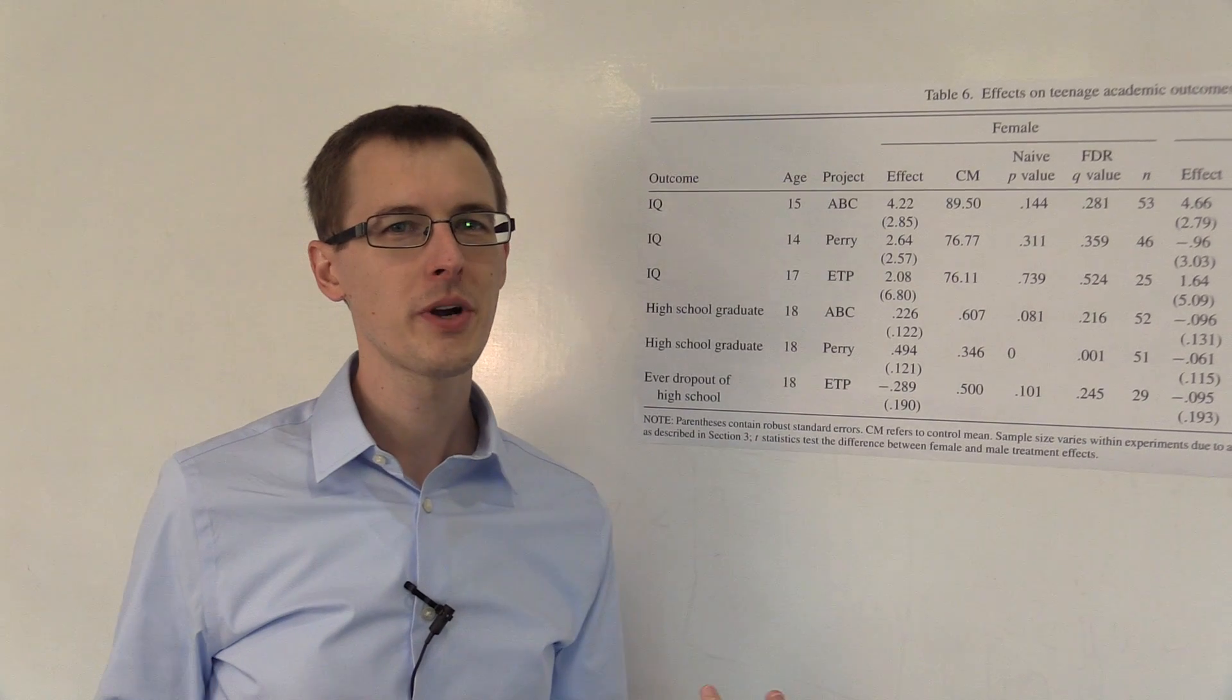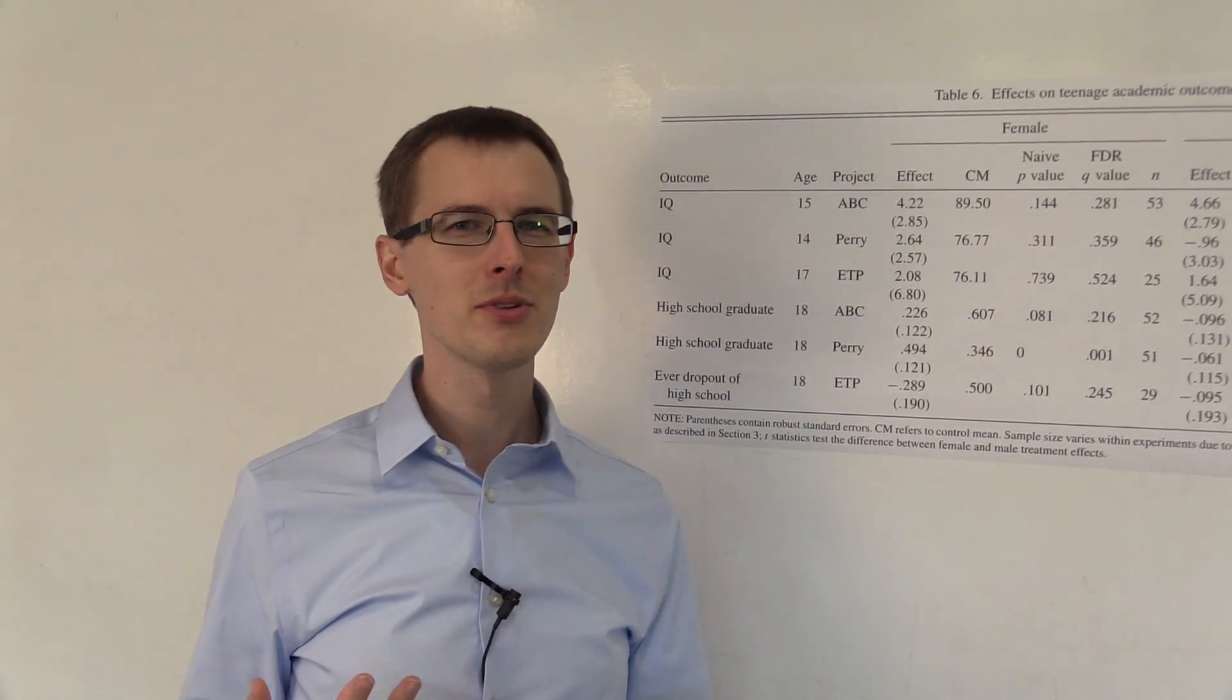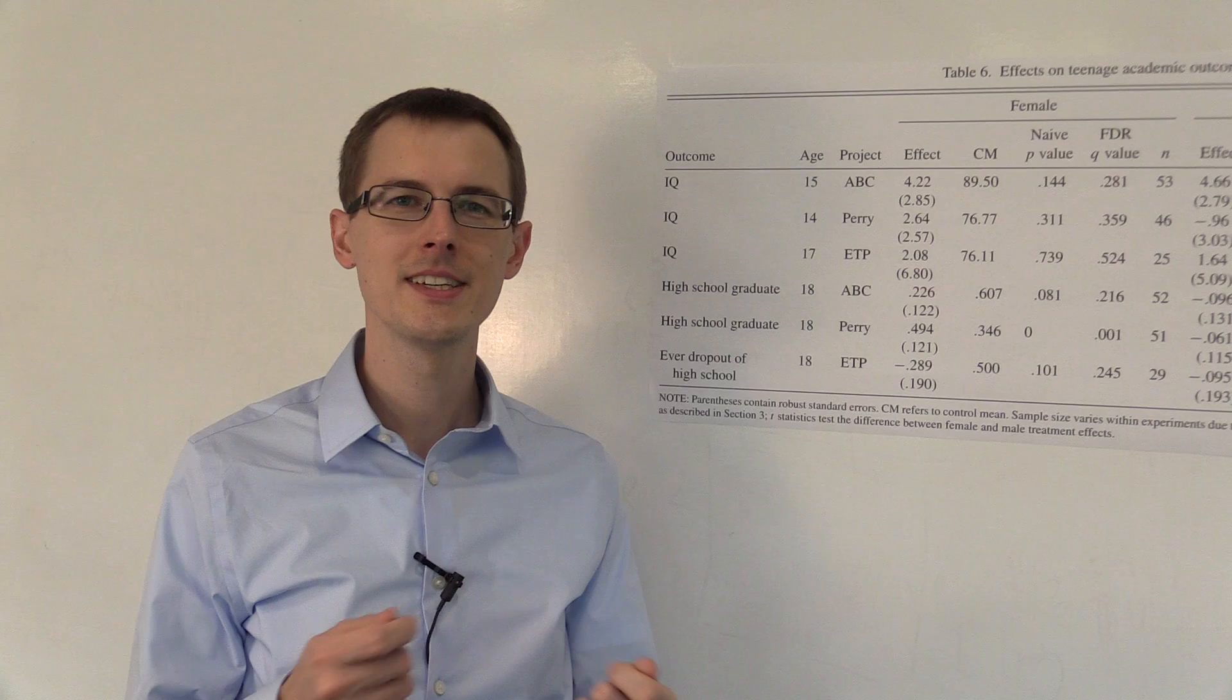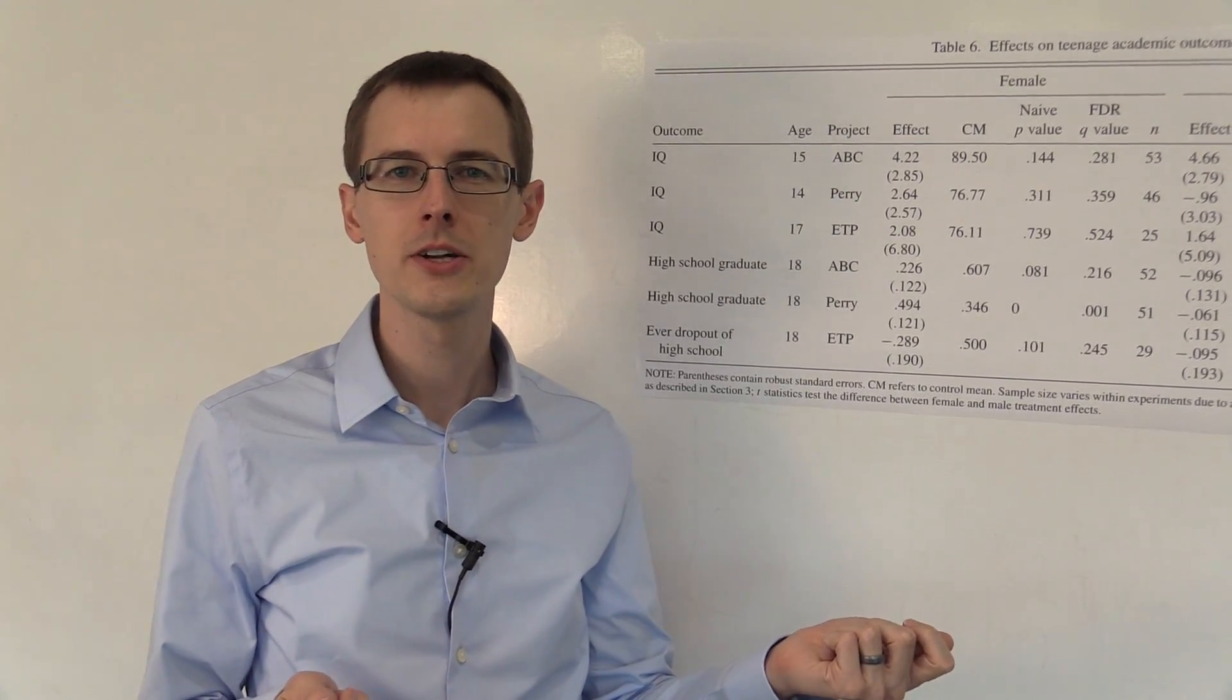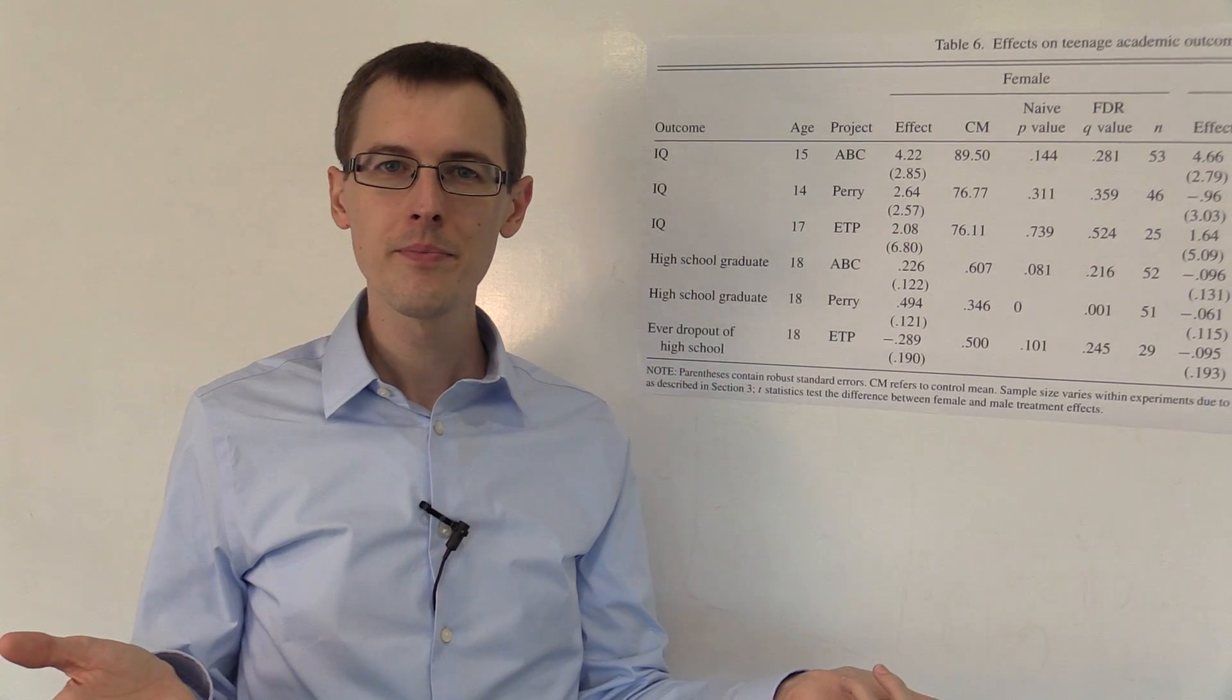So is 123 really a large enough sample size for us to conclude that these differences in means, these effects that we found in the previous modules, are real?